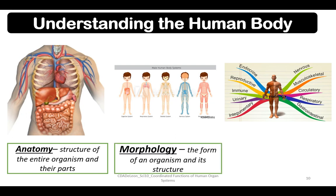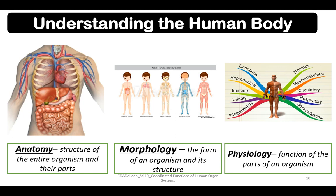Second is morphology. Morphology is the form of an organism and its structure — we are talking about shapes, the appearance of the organ. And physiology is the function of the parts of an organism; we are dealing with the function, the role of the organ in our body. So first we have anatomy, morphology, and physiology.